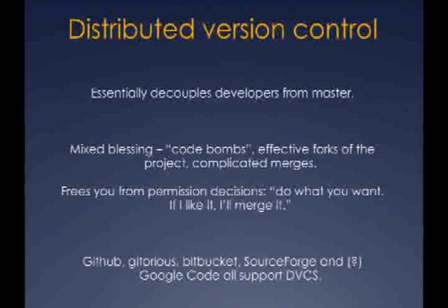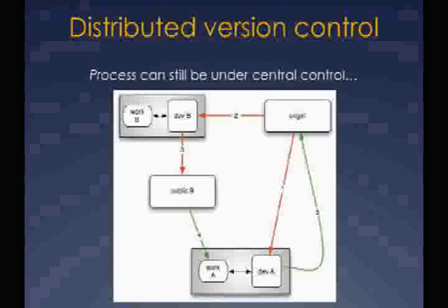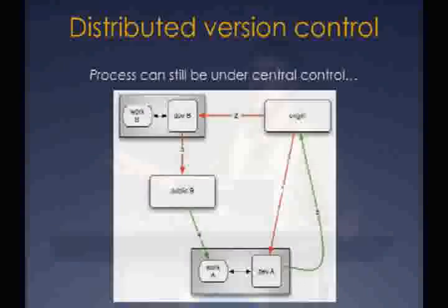GitHub, Bitbucket, Gatorius, SourceForge, and to some extent Google Code all support one or another distributed version control system. Just because the technology gives you the freedom to be utterly chaotic doesn't mean you actually need to be or should be. You can still put process in place. The technology just frees you from adherence to a particular process. In the Python graph database project Pygr, we discovered the process can still be under central control where developer B pulls things from the distributed VCS master, makes changes, communicates them to a public place, and developer A integrates them back to master.